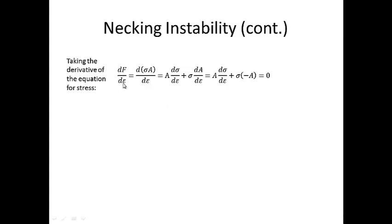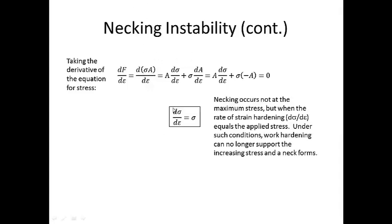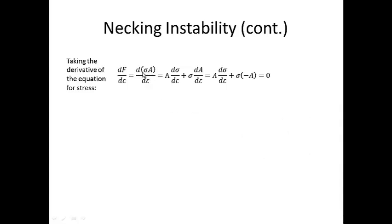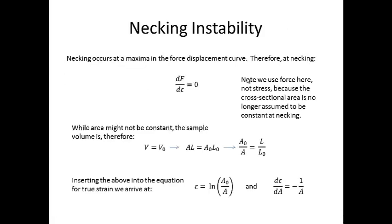Now returning back to our equation for the minima, dF over dEpsilon equals 0, we can replace dF with sigma times the instantaneous cross-sectional area, which would be the true stress for true strain. So that means d(sigma A) over dEpsilon is equal to A d(sigma) dEpsilon, if I take the partial derivative, plus sigma dA over dEpsilon equals A d(sigma) dEpsilon plus sigma times negative A, which is the inverse of the previous equation.